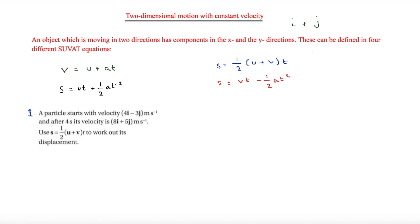These can be defined in four different SUVAT equations which will all include t. So v equals u plus at, s equals half of u plus v times t, s equals ut plus half at squared, and s equals vt minus half at squared.